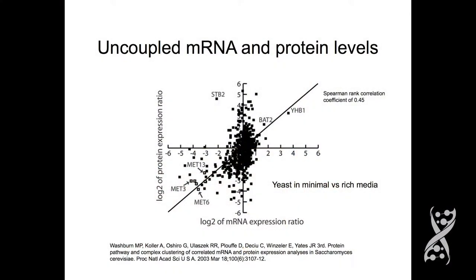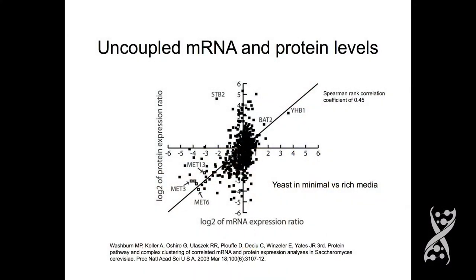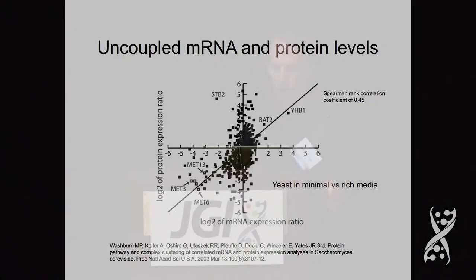This work was really inspired by a paper published 12 years ago from John Yates' group, comparing RNA to protein in yeast grown in minimal media versus rich media. If RNA could predict protein abundance, all these data points would lie on the diagonal line. But you can see they don't tend to do that very well, meaning it's very difficult to have confidence in inferences of protein abundance from RNA abundance.